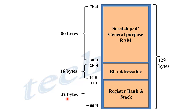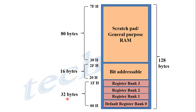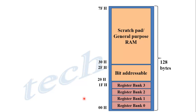These 32 bytes are again divided into four banks: register bank 0, register bank 1, register bank 2, and register bank 3. Each bank has eight registers, represented by R0 to R7. Not all banks are active at a time. In 8051, only one register bank is active at a time. By default, bank 0 is active — that means whenever the microcontroller is reset, register bank 0 is considered as the active bank.